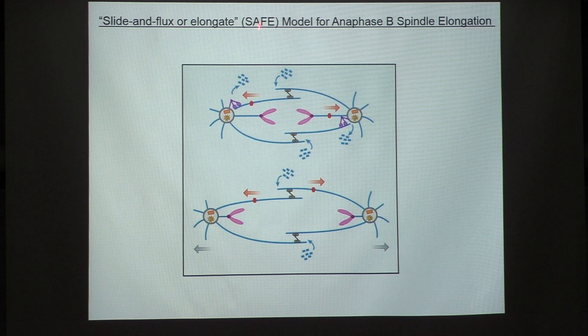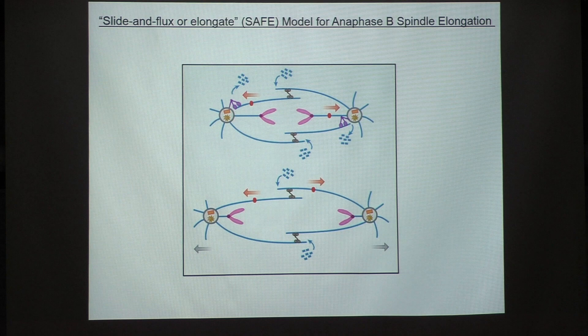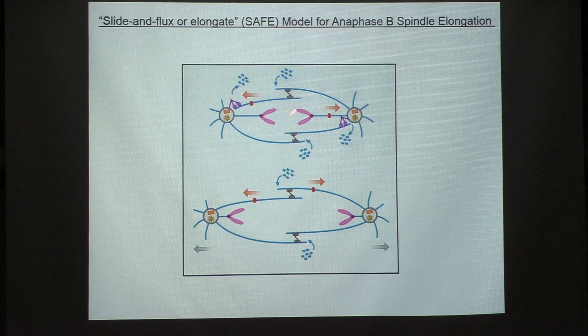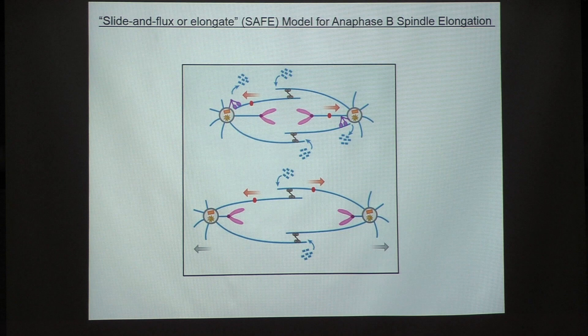This was consistent with what we now call the SAFE model — the Slide And Flux or Elongate model. We propose that microtubules are persistently slid apart by motors at the midzone. During metaphase and anaphase A, these sliding microtubules are depolymerized at the spindle poles, so sliding is balanced by depolymerization, there's no net force on the poles, and the spindle maintains constant length. When depolymerization at the poles is turned off, the outwardly sliding motors can exert pushing forces on the spindle poles and drive anaphase B spindle elongation.